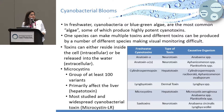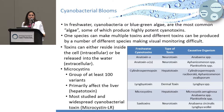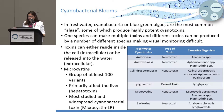On the right side is a table describing common freshwater cyanotoxins, the type of toxin, and the species that produce them. As you can see, different species can produce different toxins, and you can have a mixture of toxins at one time in a freshwater system.